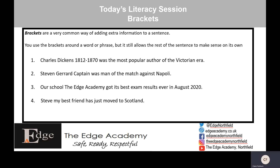Let's have a look at the examples. Number one: 'Charles Dickens (1812 to 1870) was the most popular author of the Victorian era.' Number two: 'Stephen Gerrard (the captain) was man of the match against Napoli.' Number three: 'Our school (the Edge Academy) got its best ever exam results in August 2020.' And finally: 'Steve (my best friend) has just moved to Scotland.' We often call adding extra information into a sentence putting it in parentheses. You can actually use brackets, commas or dashes.